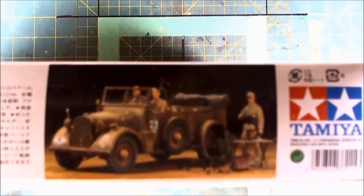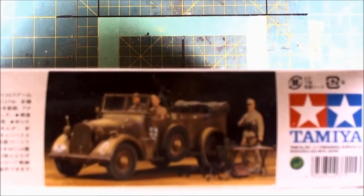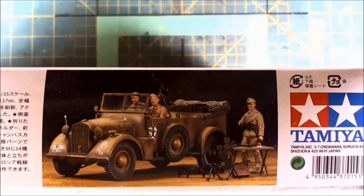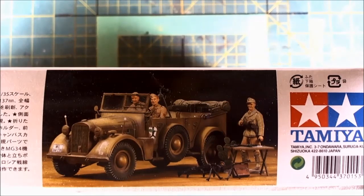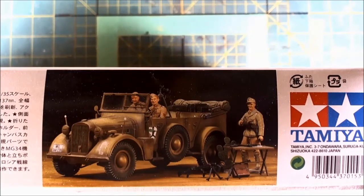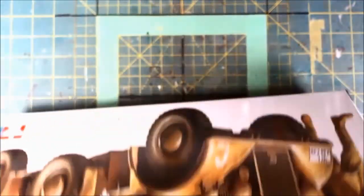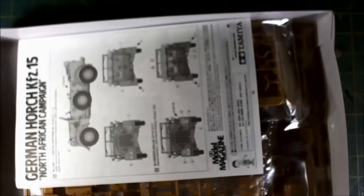So without further ado, let's go see what's in this box. There's not much on the box art as can be seen. Here's an example of what's in the kit. We see the soldier standing, there's a table and chair, briefcase. The table is going to wind up in my LRDG dio.